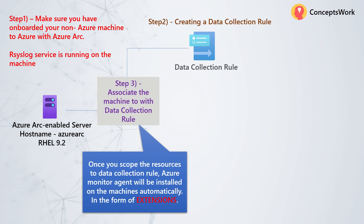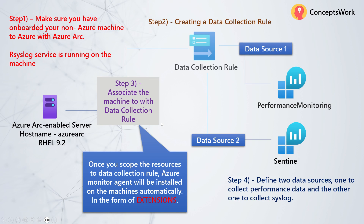Step two will be creation of the data collection rule. Step three will be associating the machine with the data collection rule. Step four will be defining the data sources — what kind of information should be captured and where exactly it should be sent. Let me show you all this in action and then things will make a lot more sense.